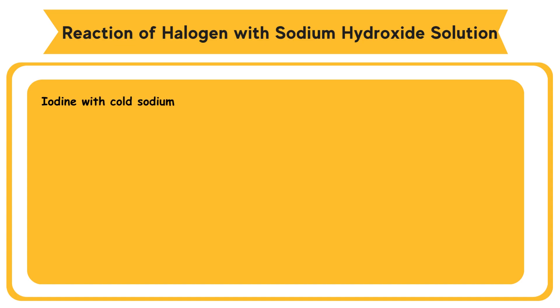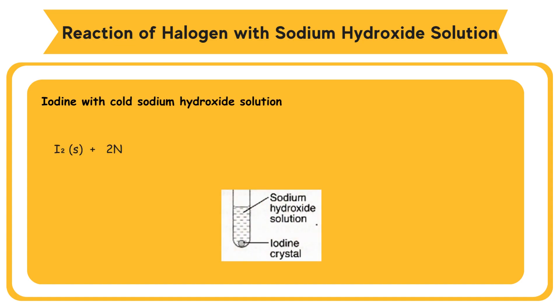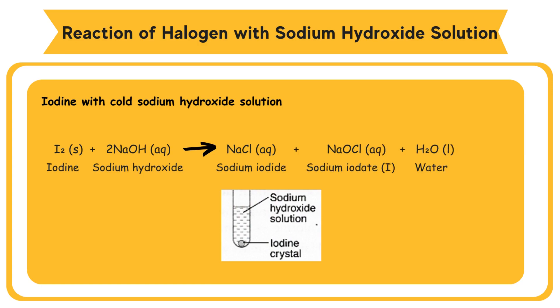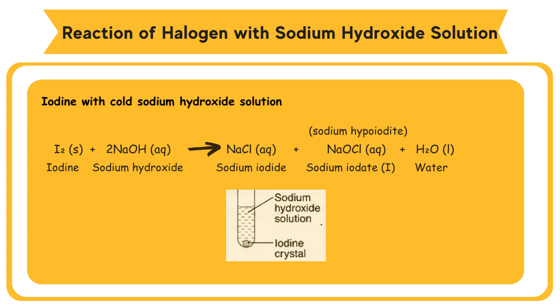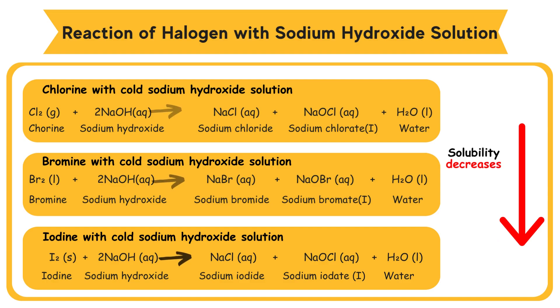For iodine with cold sodium hydroxide solution: iodine reacts with sodium hydroxide to form sodium iodide, sodium iodate(I), and water. Sodium iodate(I) (NaOI) is also known as sodium hypoiodite. The solubility of halogens in sodium hydroxide decreases from chlorine to bromine to iodine. Hence, the reactivity of halogens reacting with sodium hydroxide solution decreases from chlorine to bromine to iodine.